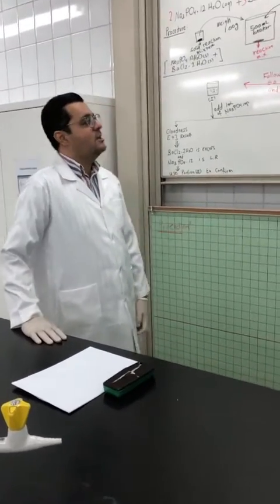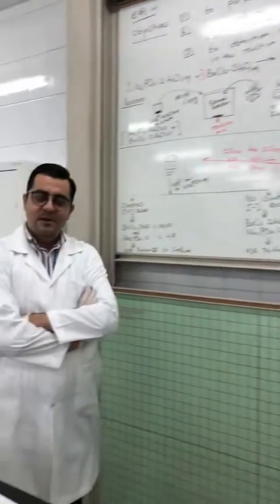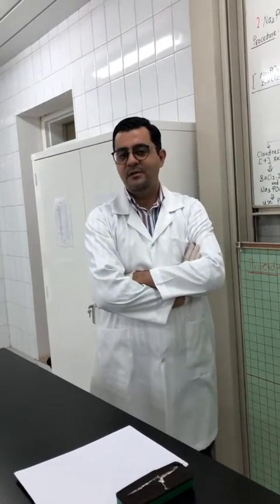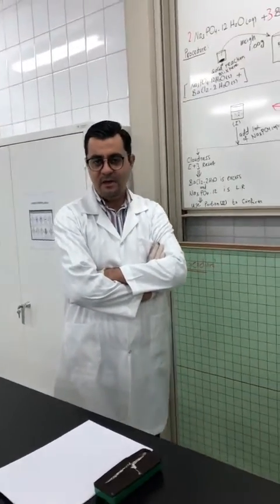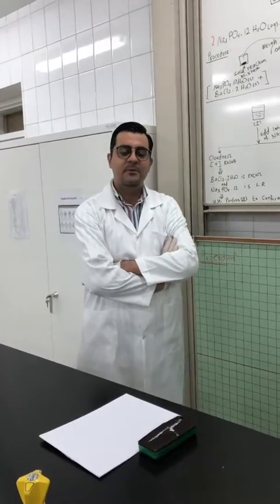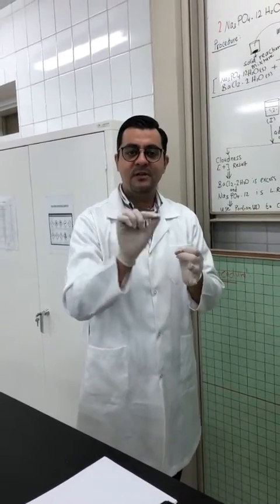Bismillah ar-Rahman ar-Rahim. The title of our experiment today is limiting reactant, experiment number four in your lab manual. In the theoretical lecture we explained the scientific identification of limiting reactant. To remind you before starting: the limiting reactant is one of the reactants that is consumed completely at the end of the reaction, and it indicates — and limits — the amount of product. This is why we call it the limiting reactant.